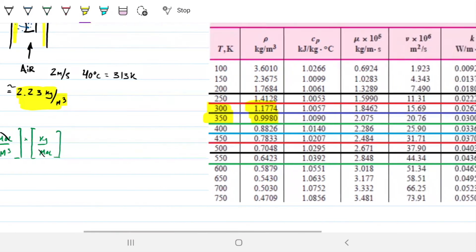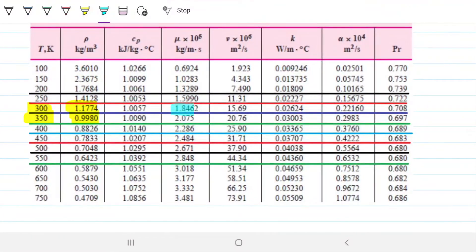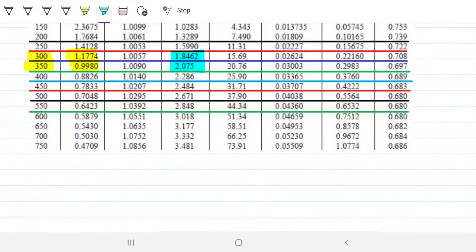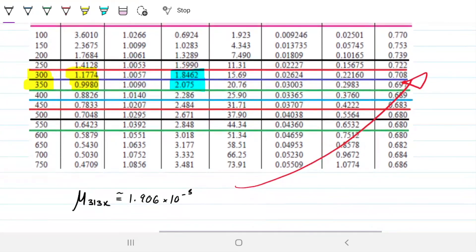Next up is the dynamic viscosity. We want to grab a value between 1.8 and 207. We're going to do that by interpolation. I'm not going to do it here because you guys are sick and tired of me doing it here. But if you're new to this, I'll leave a link here for you to see how to do it. When we interpolate this, we get approximately 1.906 times 10 to the minus 5. This is in kilograms per meters per second.